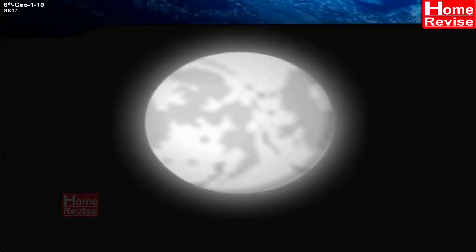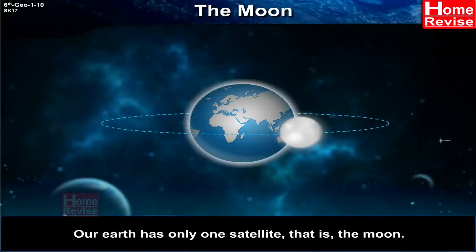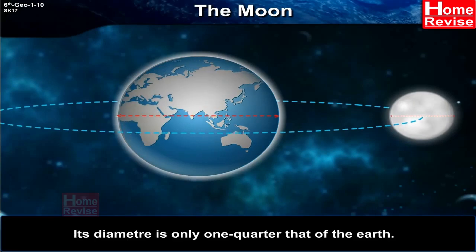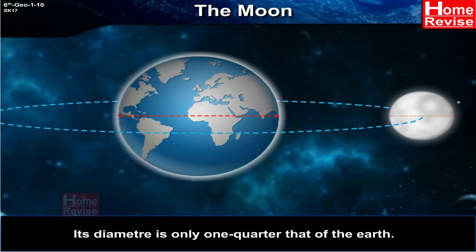The Moon. Our Earth has only one satellite, the Moon. Its diameter is only one quarter that of the Earth.